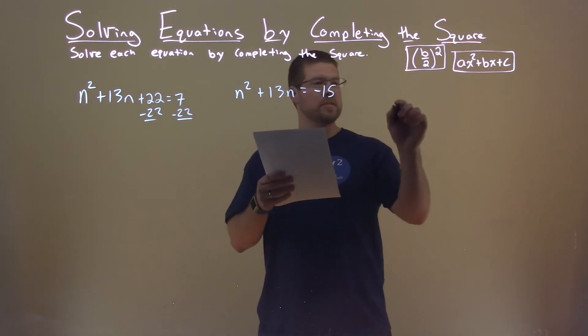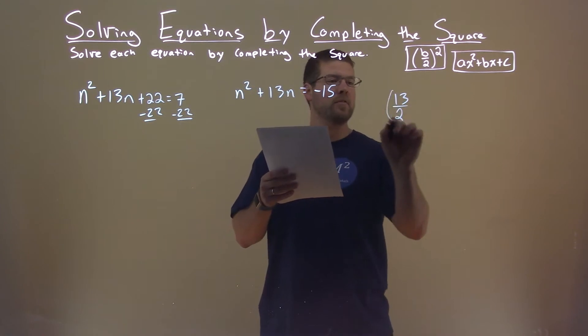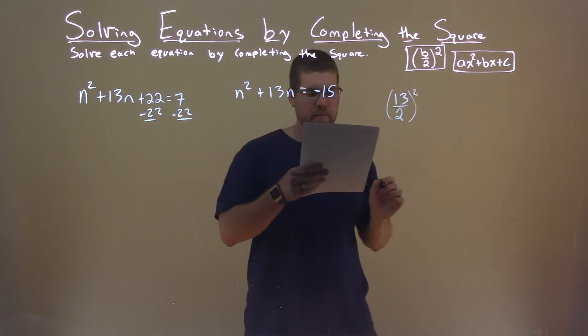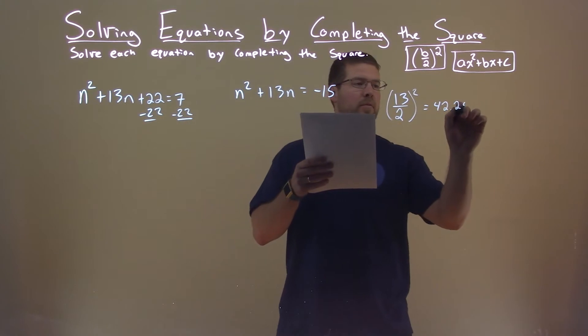We now look at our b value, which is 13. I'm going to divide that by 2. I'm going to square the whole thing. That comes out to be 42.25.